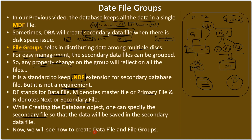Now we will see how to create a data file and associate it with a file group. The secondary data file is the one that stores the database objects' data, and the file group is used to logically group these data files so that property changes applied to the group are reflected on all assigned data files. Let's go to the demo.